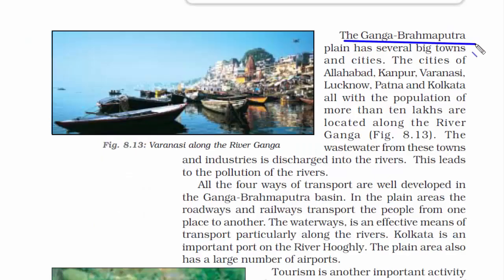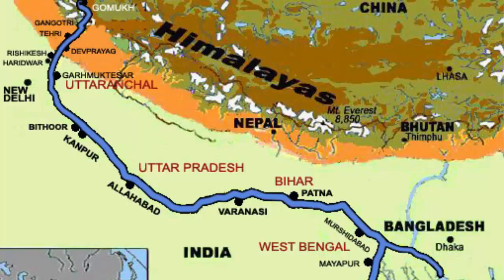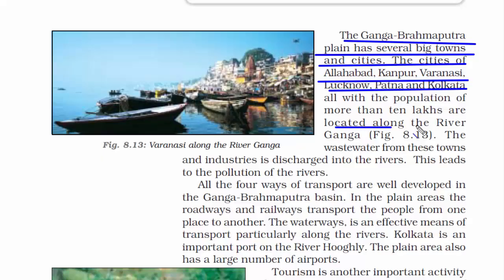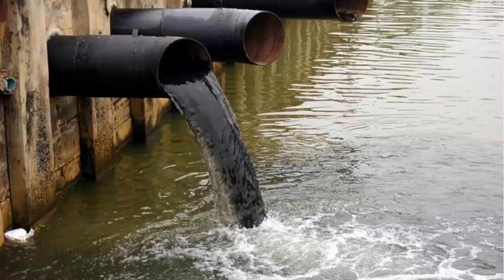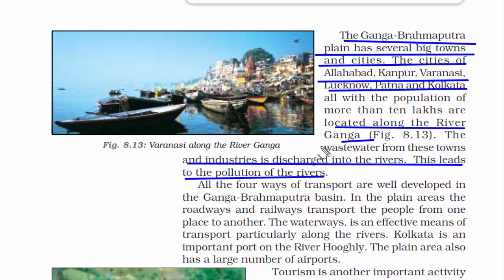The plains of Ganga and Brahmaputra are heavily populated with big towns and cities. Cities like Allahabad, Kanpur, Varanasi, Lucknow, Patna, and Kolkata are all located along the river. The wastewater from these towns and industries is discharged into the rivers, which increases river pollution.